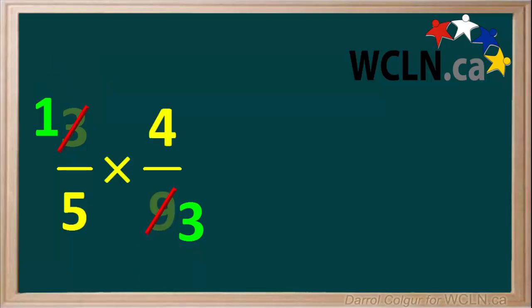Now we're left with 1 fifth times 4 thirds. When we multiply these two fractions, we can combine them into a single fraction.